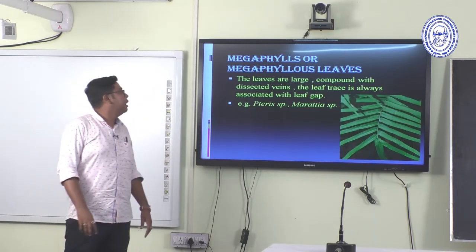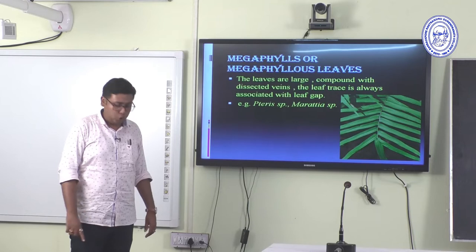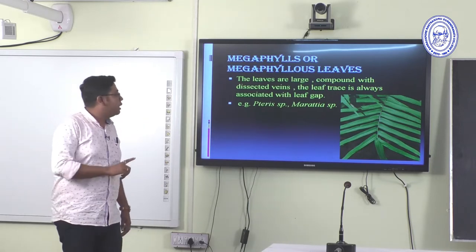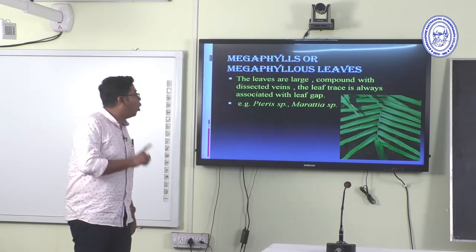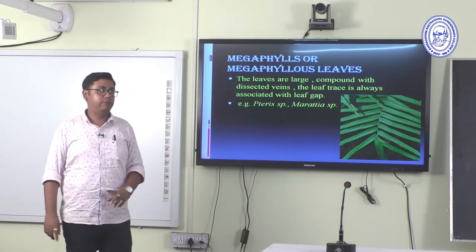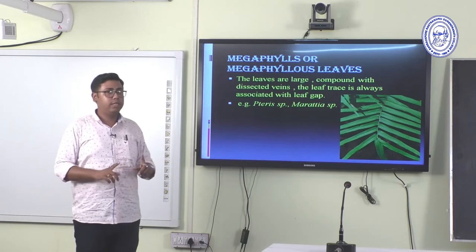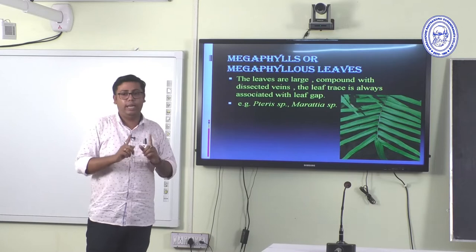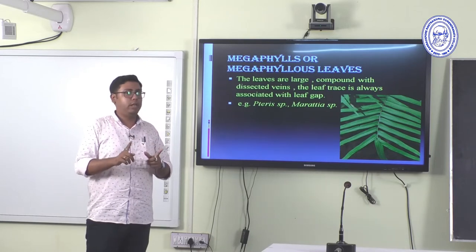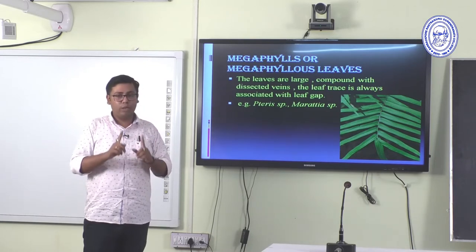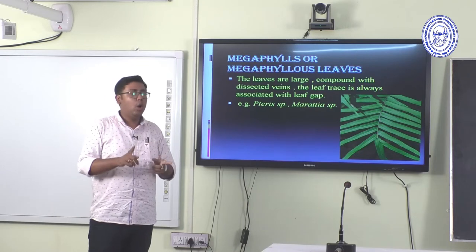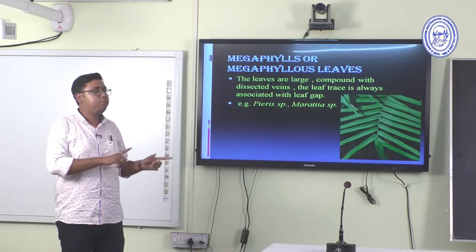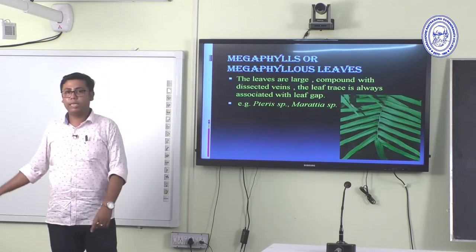Megaphyllous leaves are large and compound with dissected veins. The leaf trace is always associated with a leaf gap — this is the basic difference between microphyllous and megaphyllous leaves. Pteris and Maratia are examples of megaphyllous leaves.